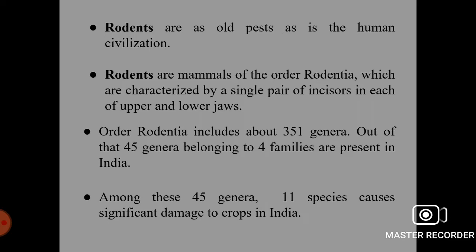Rodents are the mammals of order Rodentia, which are characterized by a single pair of incisors in each of upper and lower jaws. These are as old pests as is the human civilization. Order Rodentia includes about 351 genera, out of which 45 genera belonging to 4 families are present in India. Among these 45 genera, 11 species cause significant damage to crops in India.